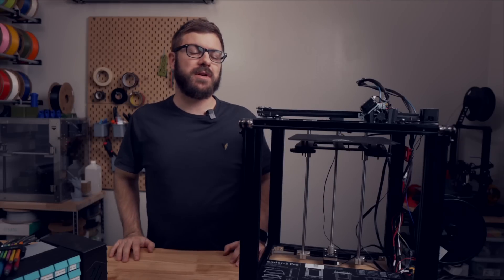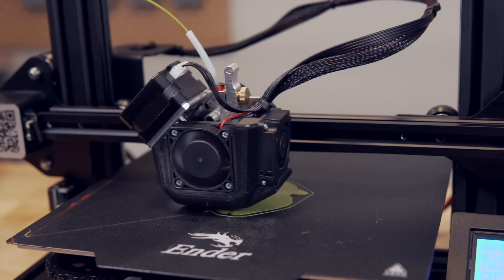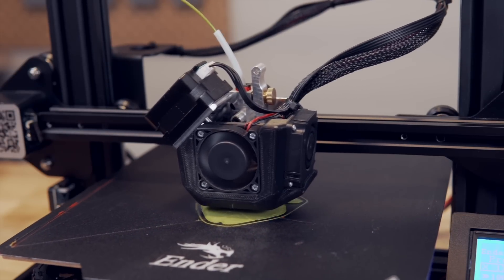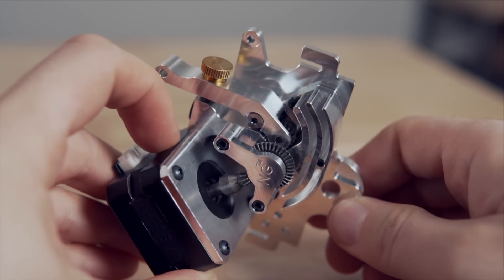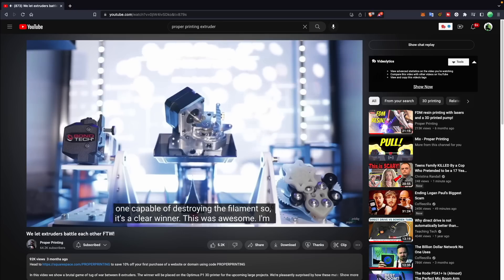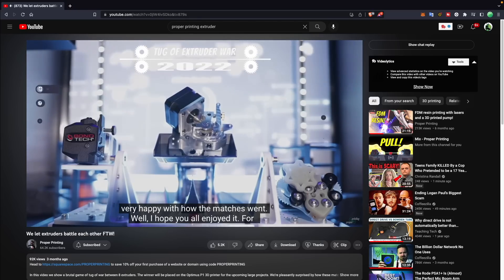I've been running the Micro Swiss NG extruder on two of my Ender 3s for the better part of a year now and have really enjoyed using them. The NG is a pretty unique dual gear direct drive extruder with a three to one gear ratio and the winner of proper printing's extruder tug of war.